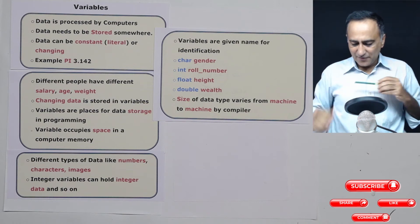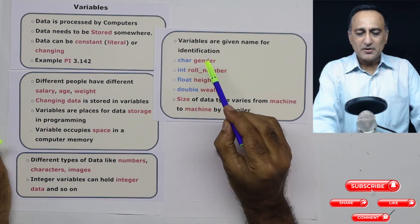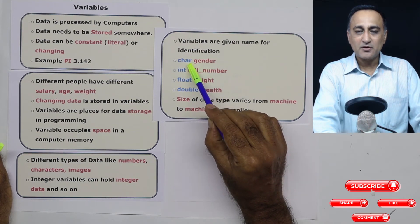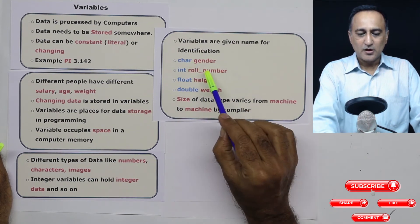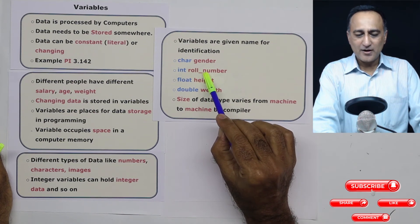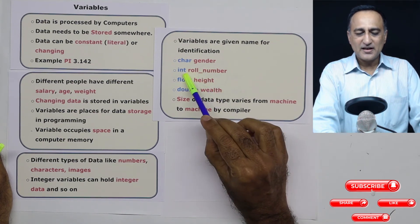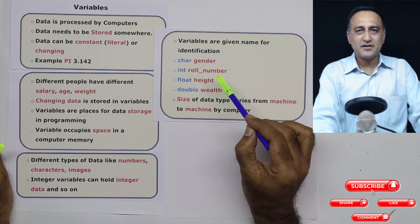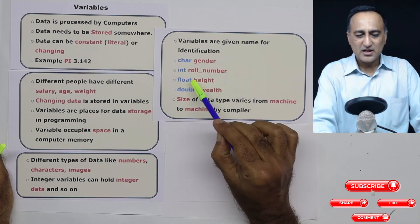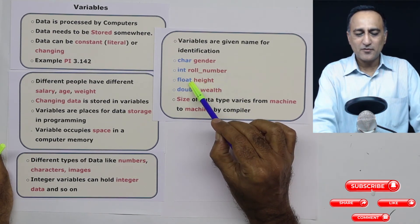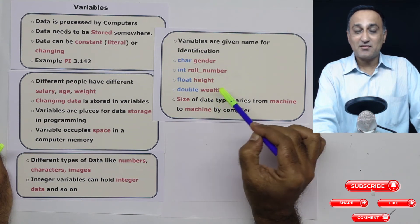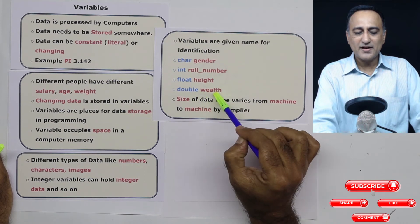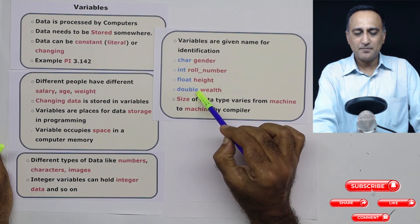For example, if I have to declare a variable of the type character, I can declare something like this: gender is a variable of the type character. Roll_number is always going to be a whole number, not going to have fractions or decimal places. I've declared it as integer. Height can be a real number because somebody's height can be 4.5, somebody's can be 5.6. So that's why I declared it as a real number or float. Then let's say somebody's wealth is really high, maybe a big guy in the world. So we can declare his or her wealth as double of data type double.